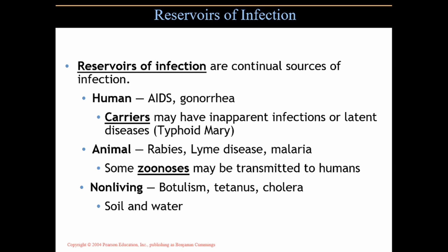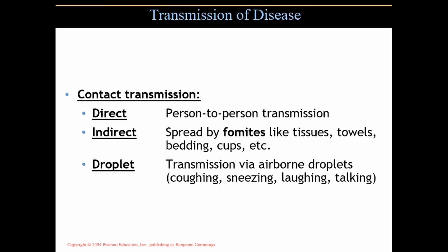Animal reservoirs include diseases like rabies, Lyme disease, and malaria — these zoonoses can be transmitted to humans. A rabid animal biting a human can transmit rabies; a tick bite can transmit Lyme disease bacteria into the bloodstream; and malaria works similarly. These are normally animal infections, but they can be transmitted to us. Non-living reservoirs, like soil and water, carry bacteria that cause botulism, tetanus, and cholera — we can consume or contact them and get those diseases.